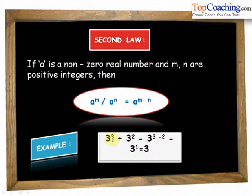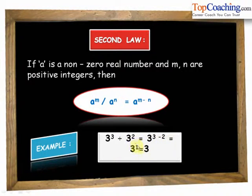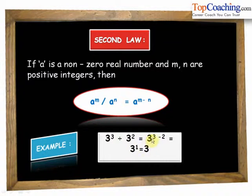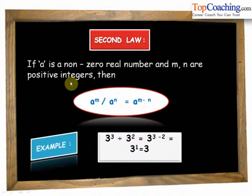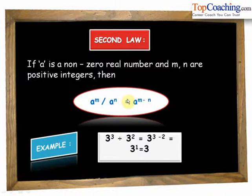For example, 3 cubed divided by 3 squared is equal to 3 to the power of 3 minus 2, which is equal to 3 to the power of 1, which equals 3. We subtract both exponents to get the final value. Thus if we have to divide a to the power of m by a to the power of n, this equals a to the power of m minus n.